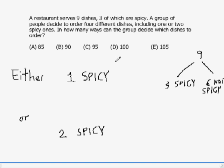Remember, they're ordering four dishes in total. So they're ordering, in this case, one spicy dish and three not spicy. Here they're ordering two spicy and two not spicy. So we break this up into cases and we break up the cases into subtasks.